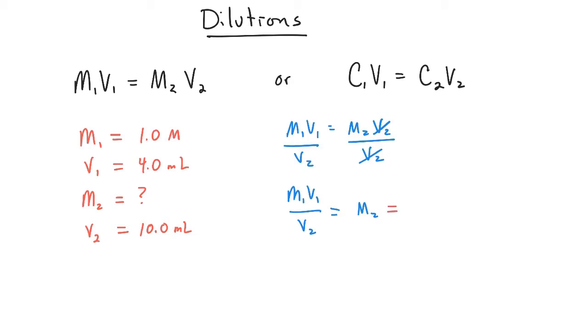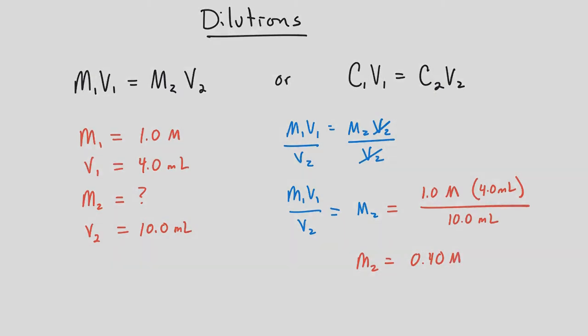So M1 is 1 molar, and V1 is 4 milliliters, and V2 is 10 milliliters. So, when we solve for M2, M2 is going to be 0.4 molar.